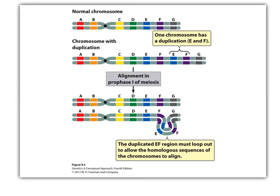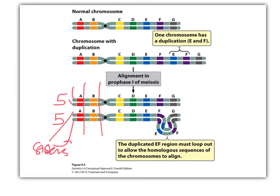How this works when there's a duplication is that it can mess up the alignment in meiosis. Because the homologous chromosomes — pretend this is chromosome 5 and its partner chromosome 5 — these are the sisters, and they line up because they have the same genes. The duplication has to loop out in order for it to align so that we can get correct meiosis happening.